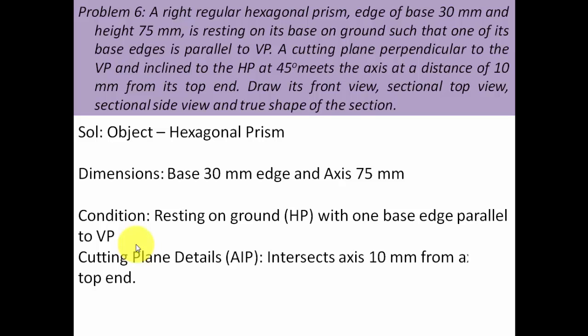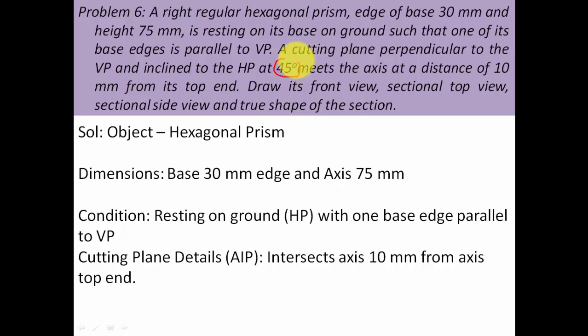Now the cutting plane is an AIP — auxiliary inclined plane — perpendicular to the VP and inclined to the HP. It passes through a point on the axis that is 10 mm below the top end, making an angle of 45 degrees with the horizontal plane. Note this down: cutting plane at 45 degrees with HP.